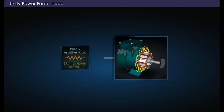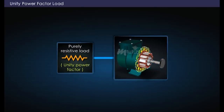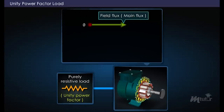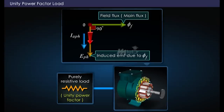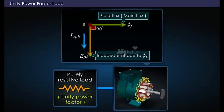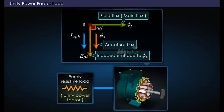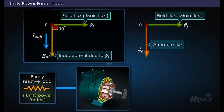Let us consider an alternator connected to a purely resistive load, that is a load with unity power factor, and draw its phasor diagram. Taking the main flux phi_f as reference, the voltage induced in the armature, E_ph, lags behind phi_f by 90 degrees. A current I_aph flows in the armature in phase with the voltage E_ph driving it. This current produces a flux phi_a, which is also in the same direction as that of the current I_aph producing it.